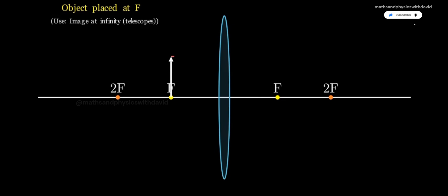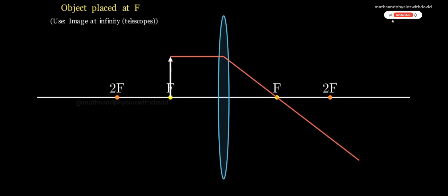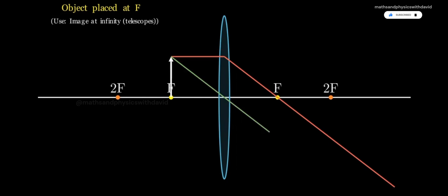Case 4, Object on F. Start with a ray parallel to the axis. After passing through the lens, it bends and goes through the focus. Now, draw the second ray through the center of the lens, undeviated.